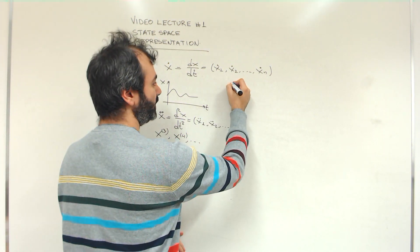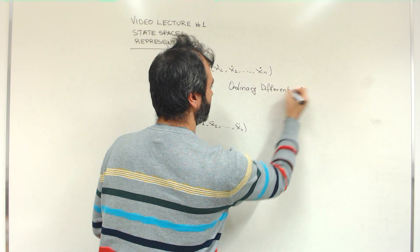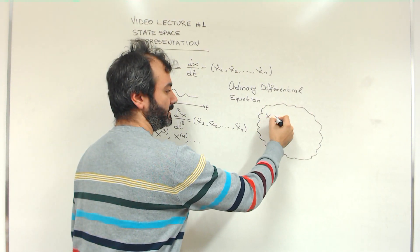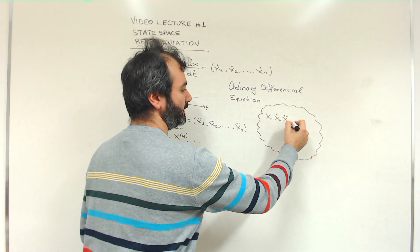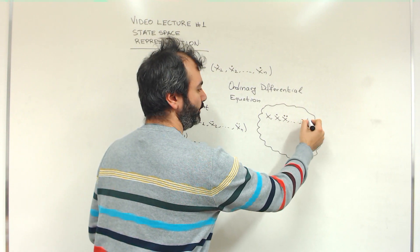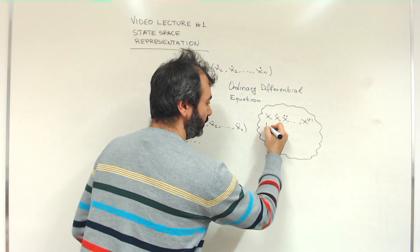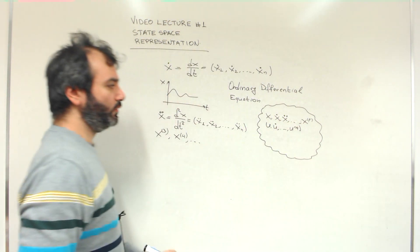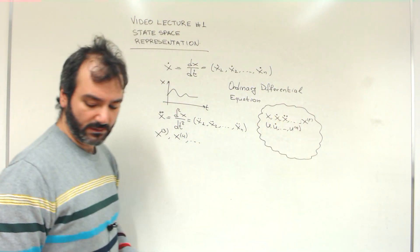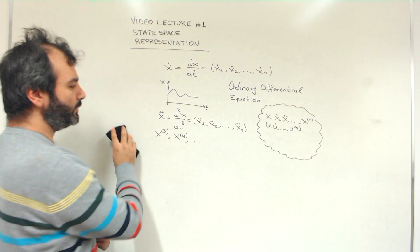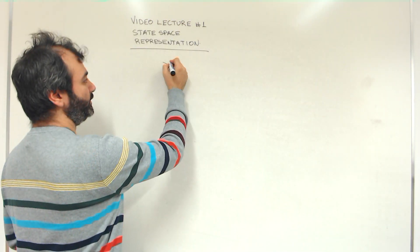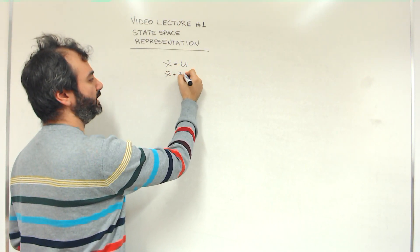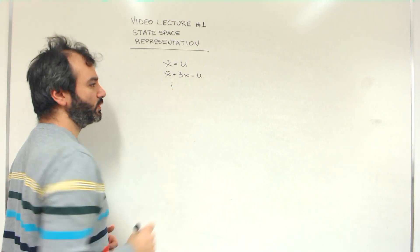An ordinary differential equation is an equation that involves x, its first derivative, second derivative, third, and so on, up to some pth order derivative, as well as u and some of its derivatives up to some order, let's call it q. So an equation that involves some of these terms. Let's give an example. It can be as simple as x dot equals u, or x double dot plus 3 times x equals u, and so on and so forth.